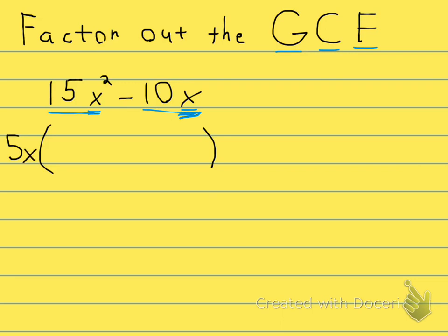That's the GCF, the greatest common factor. Now when I factor it out, I have to write what's left over. Looking at the first term, what's left after I take out the 5x?